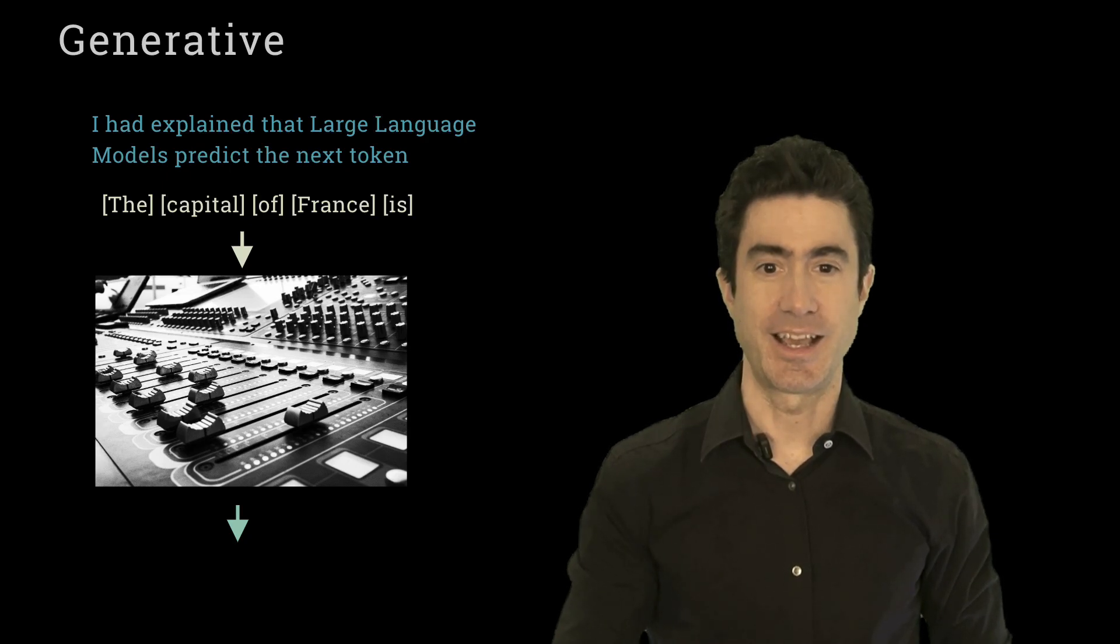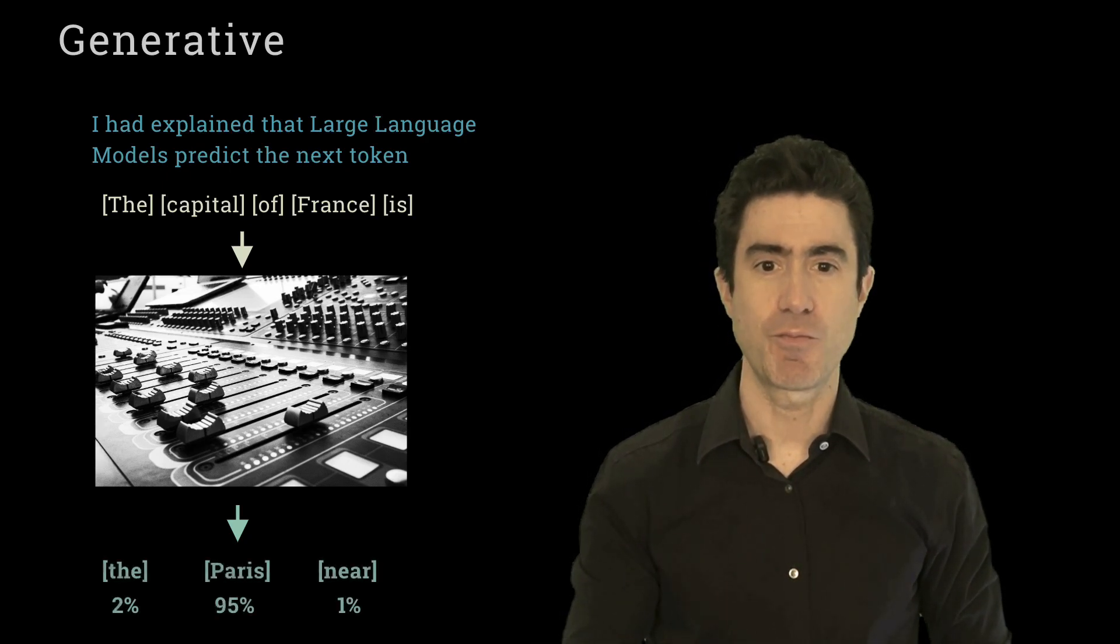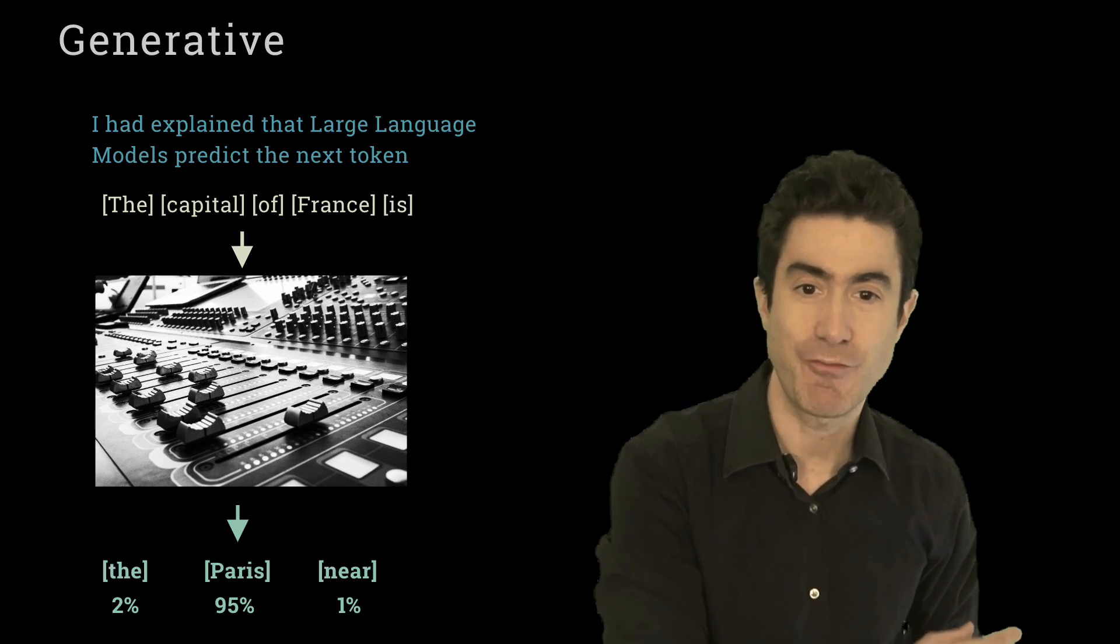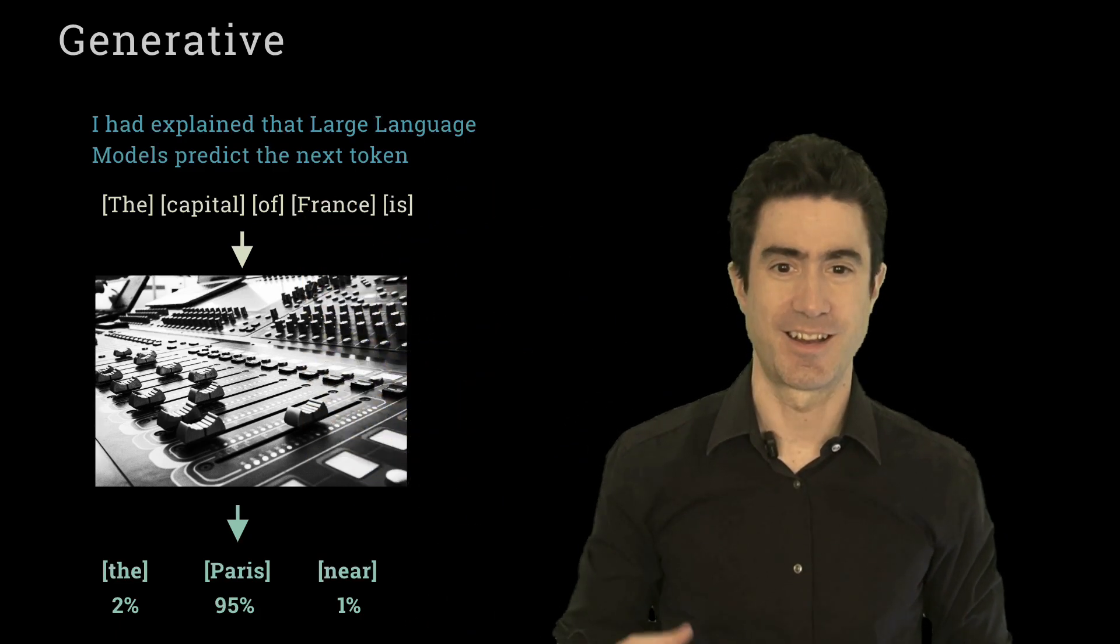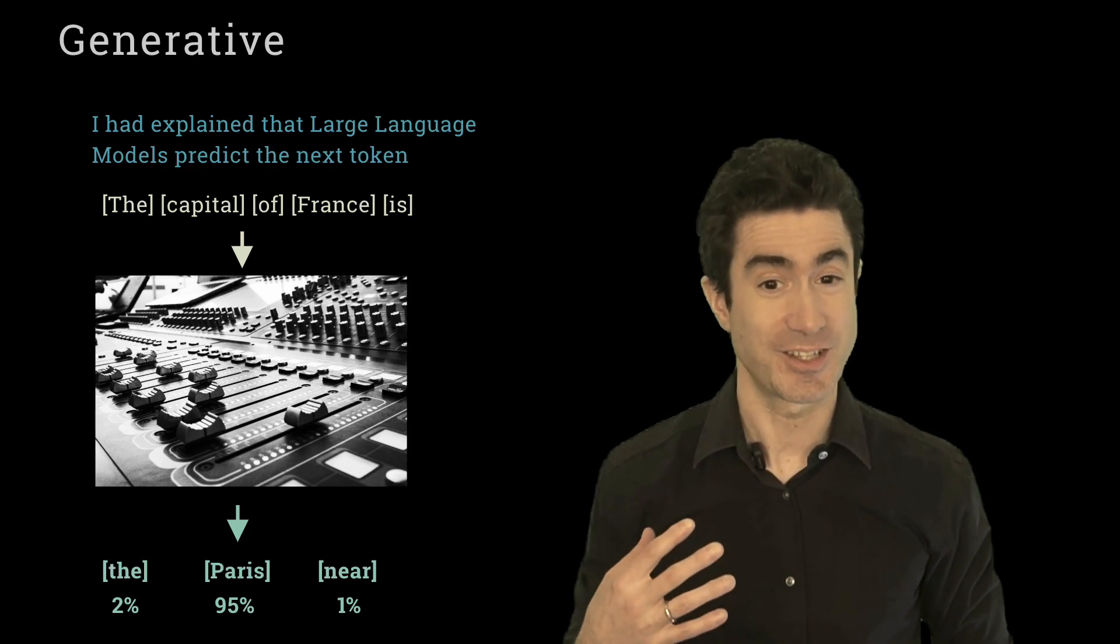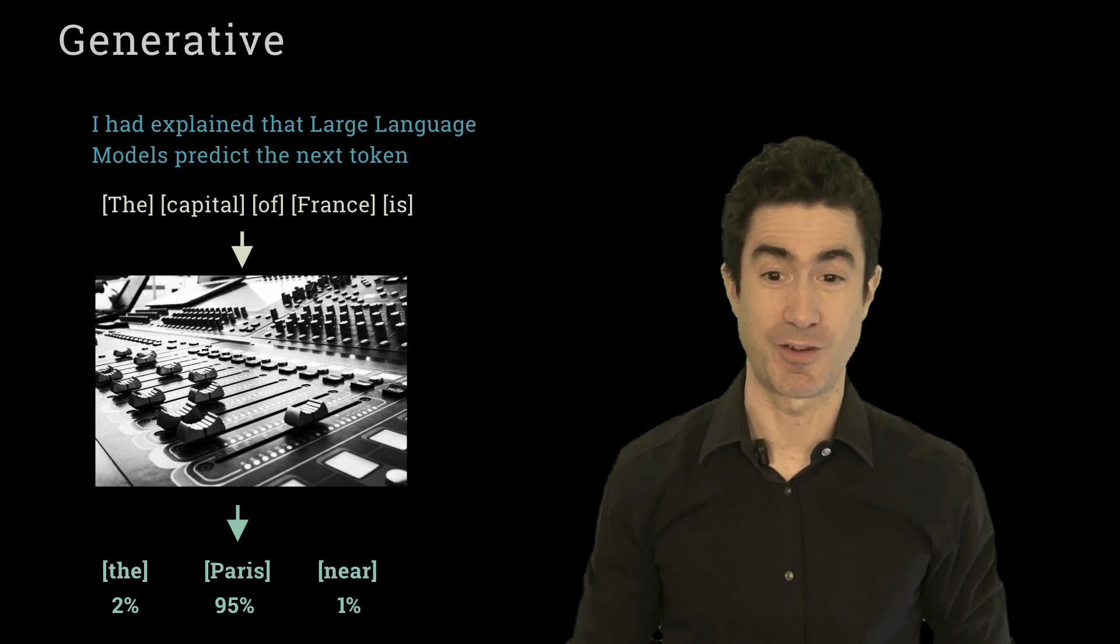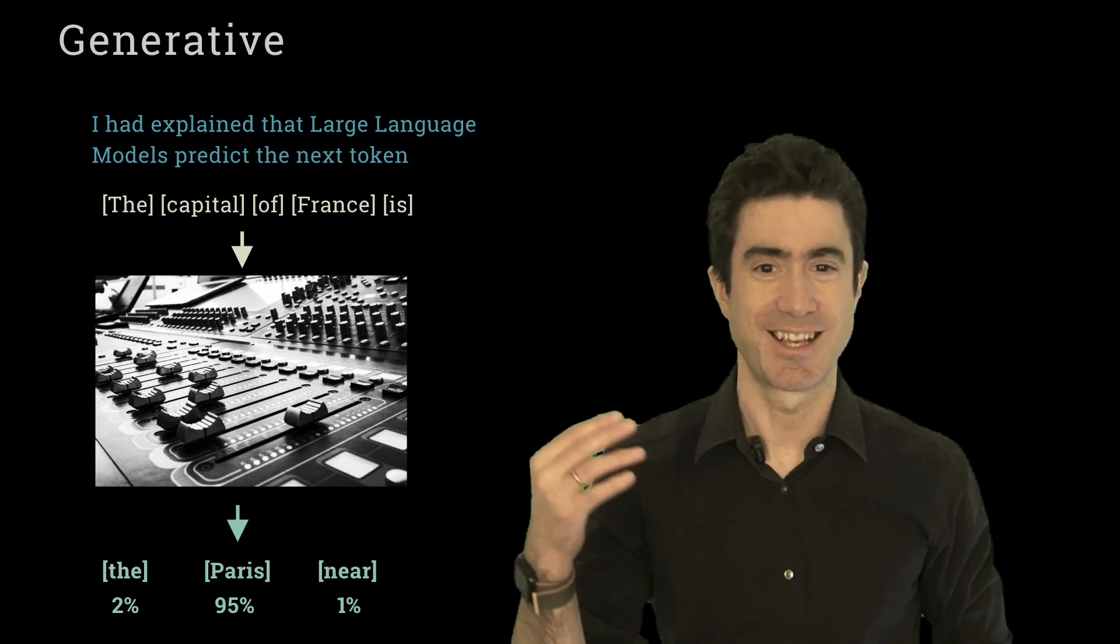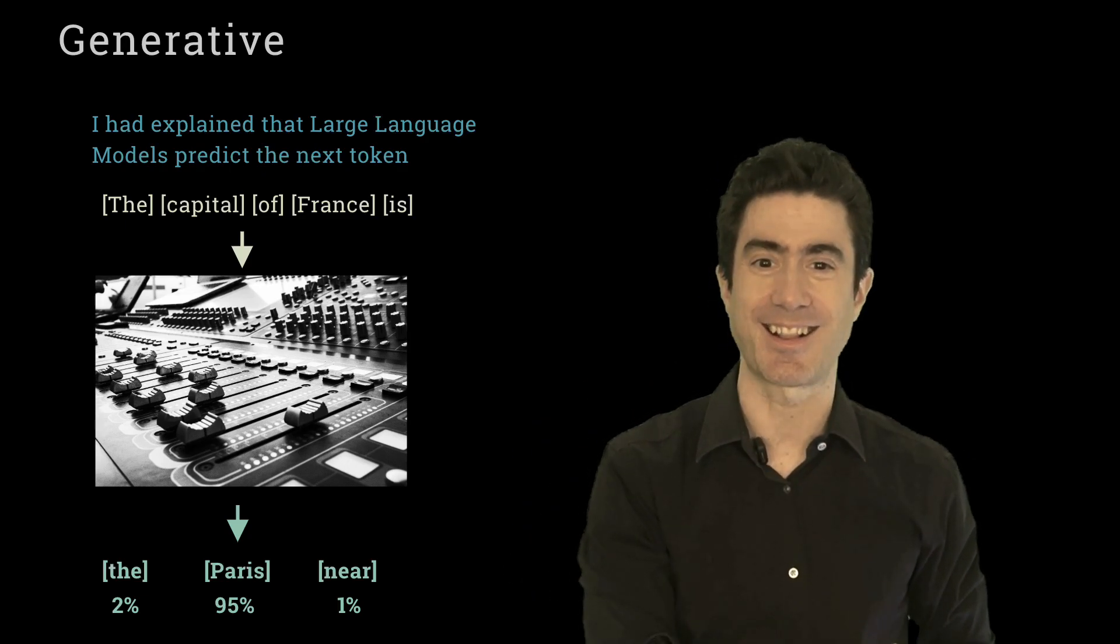What it actually does is it creates, it outputs probabilities. It outputs probabilities of every possible next token. Every one of the tokens that it has in its entire vocabulary of tokens. Each one is given a probability. There are some that have very small probability. Presumably a word like gherkin would be a very unlikely word to follow the capital of France is. But presumably, hopefully, Paris is a word which gets a very high probability as being a likely next token.